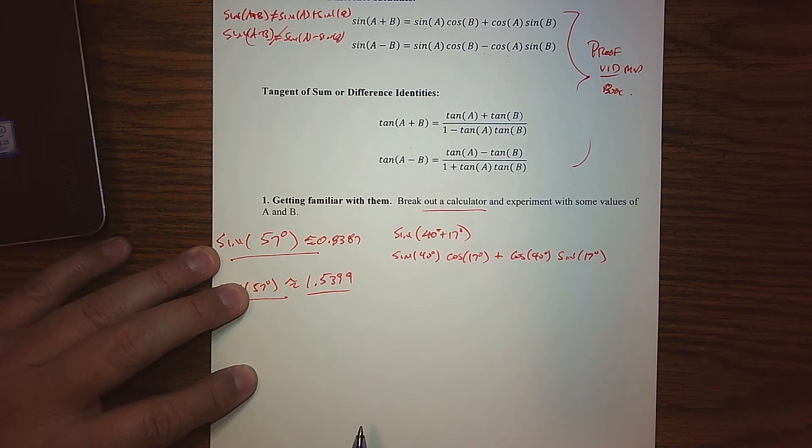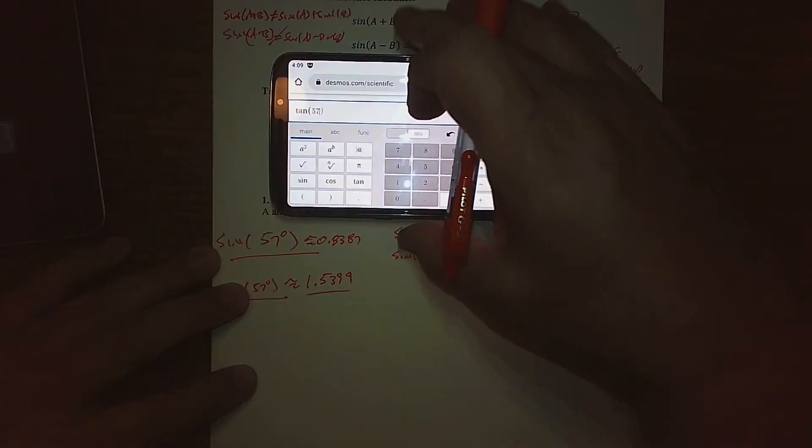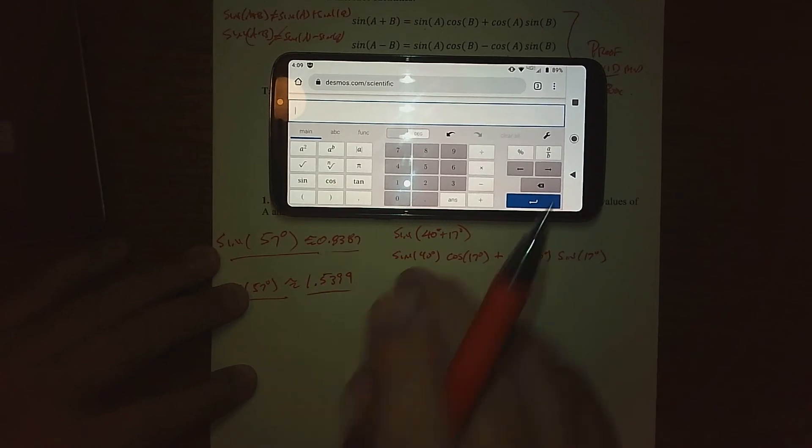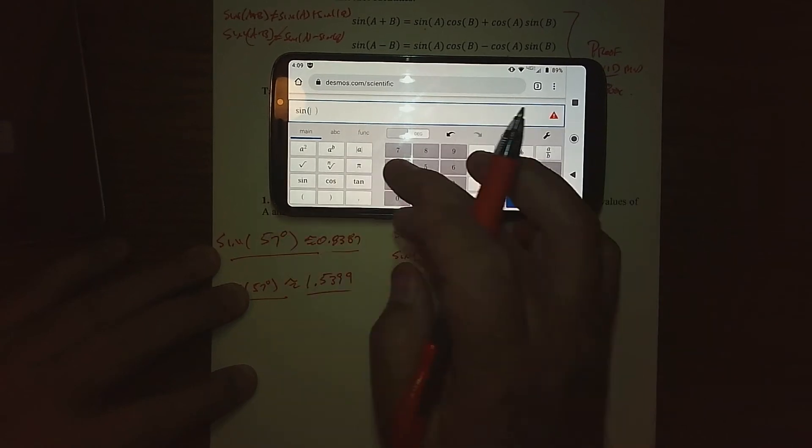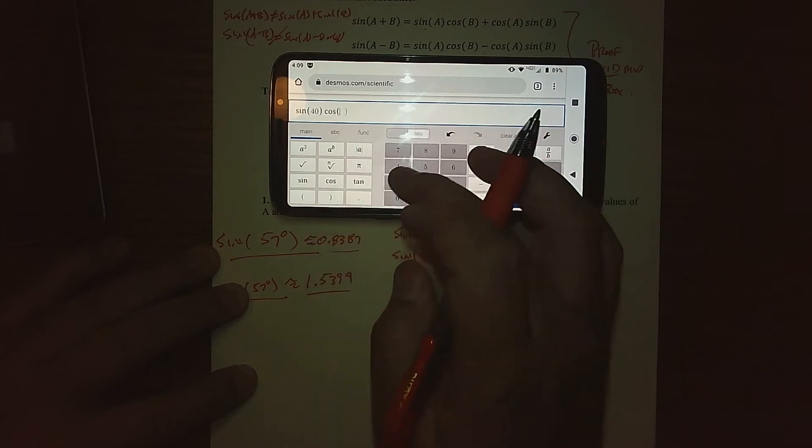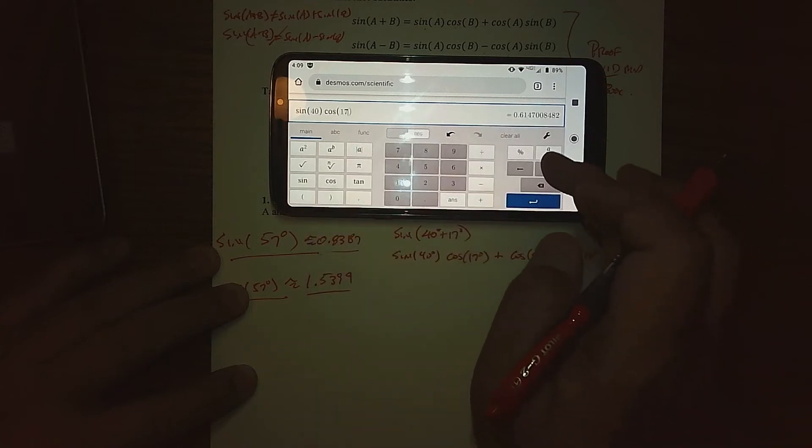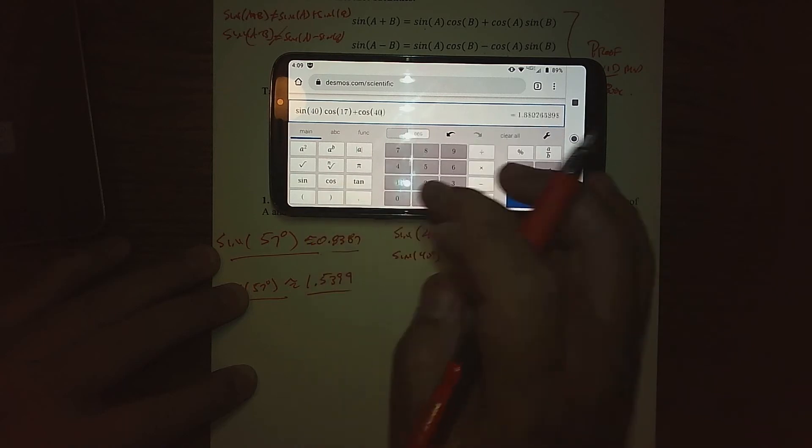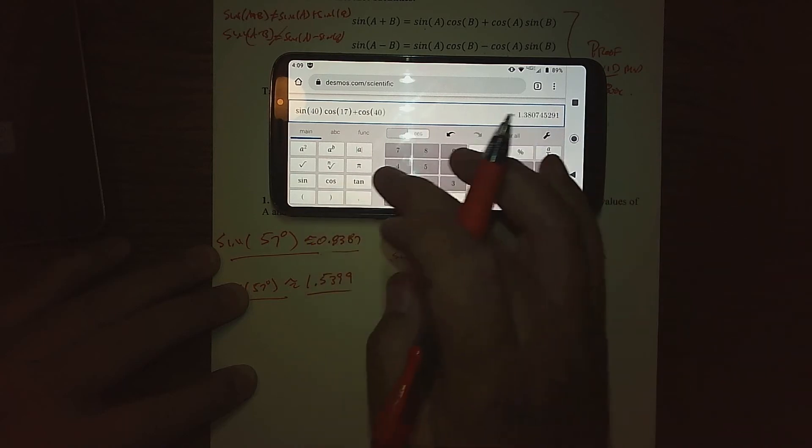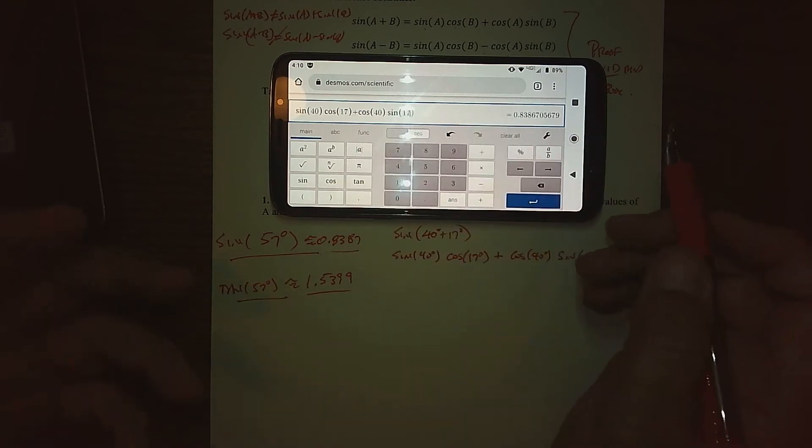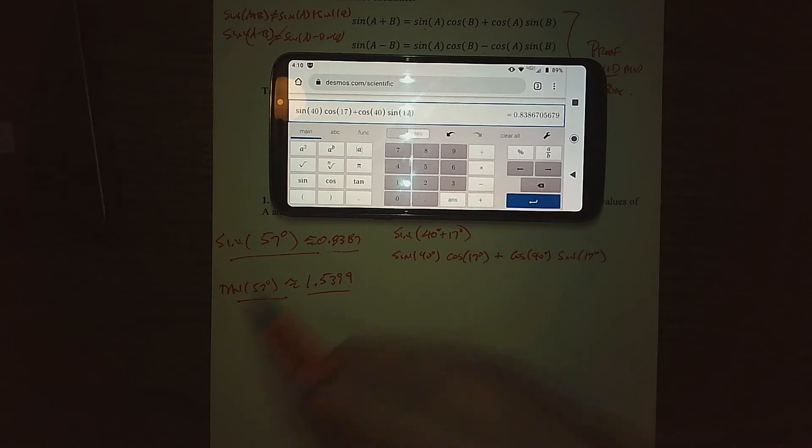So when we reach over for our calculator and type that in, we'll see that we'll get the same value that we got here. So we've got the sine of 40, and then we're going to multiply that to the cosine of 17. And then we're going to add to that the cosine of 40 and the sine of 17. And lo and behold, we got the same decimal answer, which is expected because this is an identity.